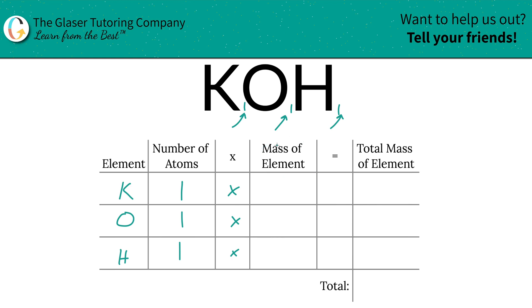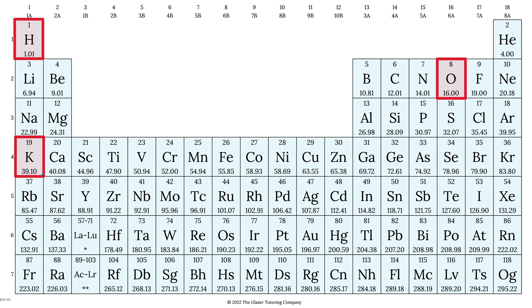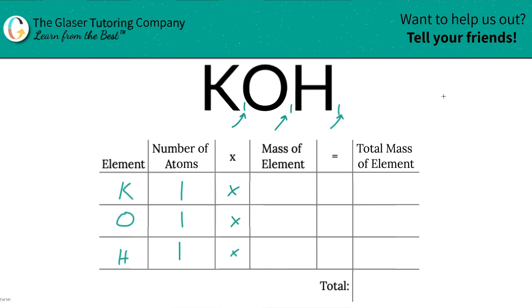Then multiply it by the mass of the element — we're going to use the periodic table to help us out. So the mass of potassium is 39.1, hydrogen is 1.01, and oxygen is 16. So let's plug them in: 39.10, oxygen was 16, and hydrogen was 1.01.